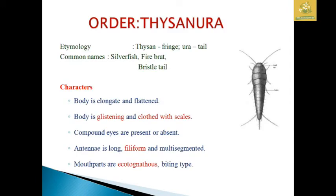The order we are going to see is Thysanura. The etymology of the name: 'Thysano' is known as Fringes and 'Ura' is known as Tails. Their common names are Silverfish, Firebrat, as well as Bristletail.